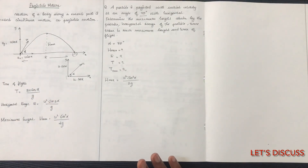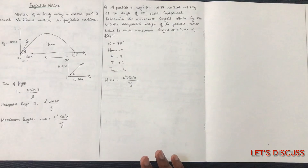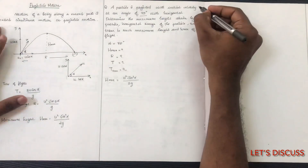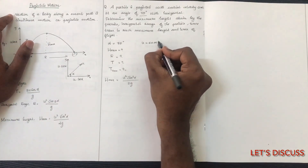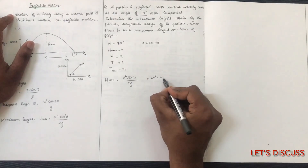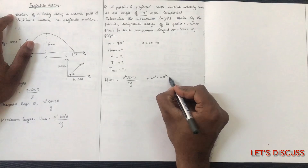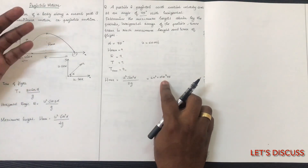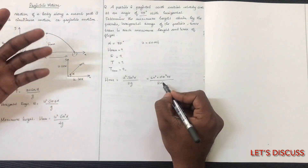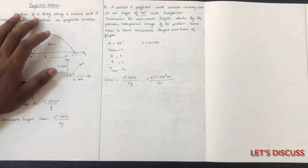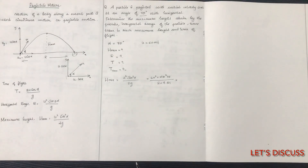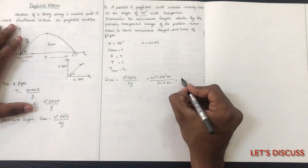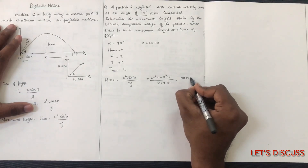The initial velocity is 60 meters per second. So h max equals 60 squared times sine squared 75 divided by 2 times 9.81. We calculate sine squared 75 and apply it. The result for h max is 171.2 meters.